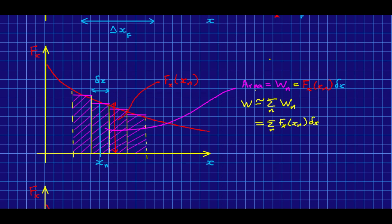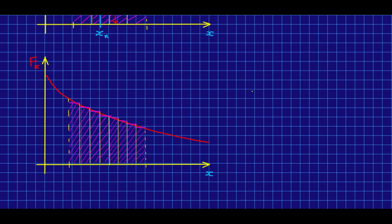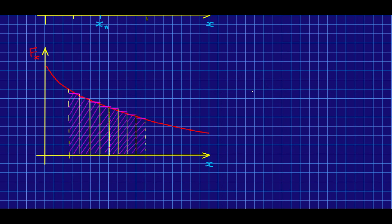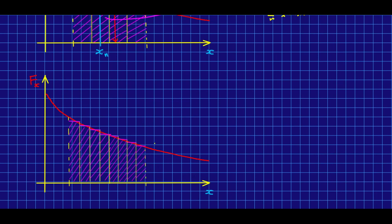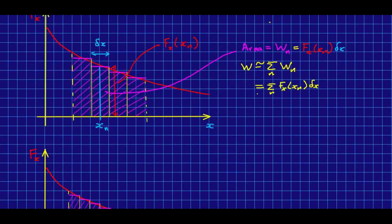Well, the final thing to do is to think of making the rectangles narrower. And as we make them narrower, we expect that they become a much better approximation to the actual work, the actual area under this graph.